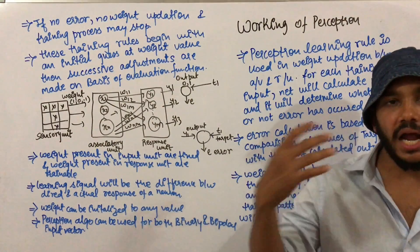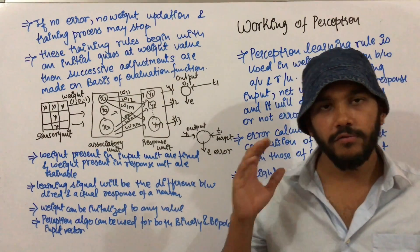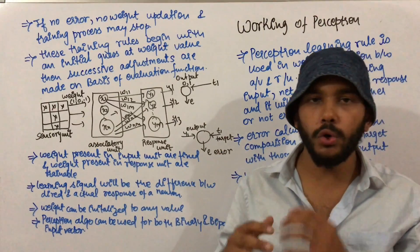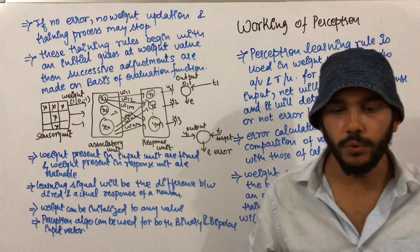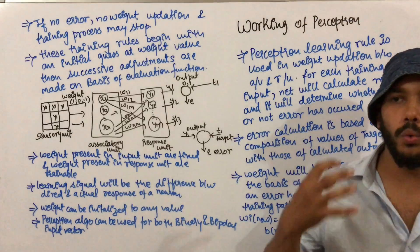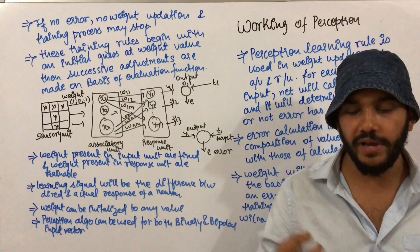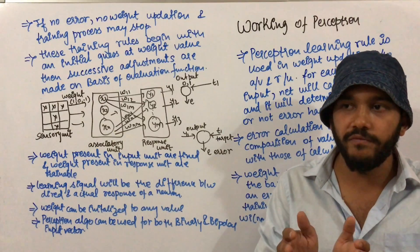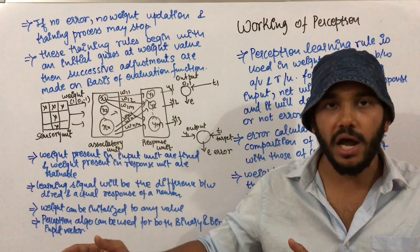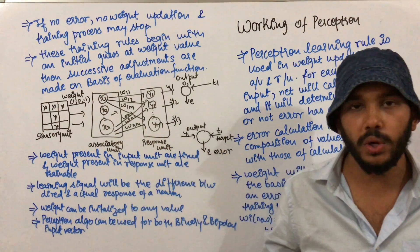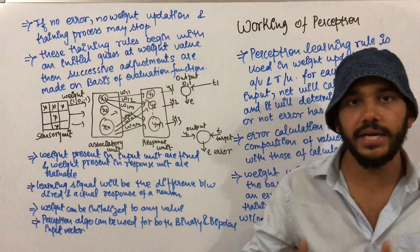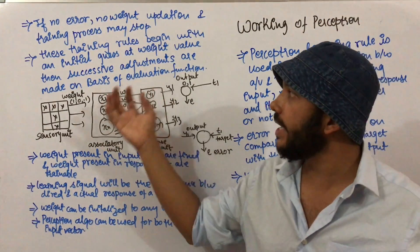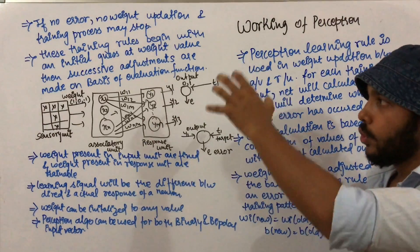Suppose our target output weight is 15. We begin with a guess value because in a learning model we don't know what the actual value is. We begin with some random value and check whether that random weight is equivalent to the target output weight. If it is not equal, we again update the weight with the learning rule, and finally we will be able to reach the goal.